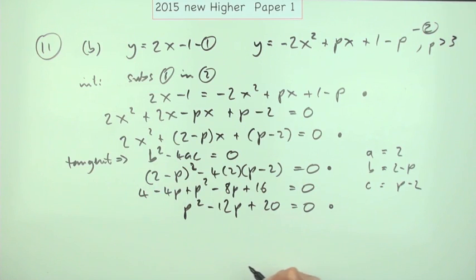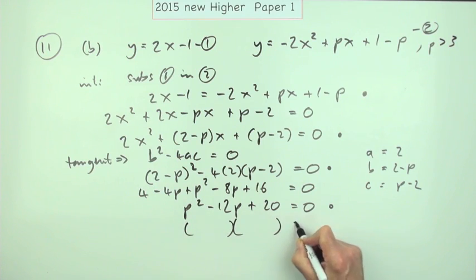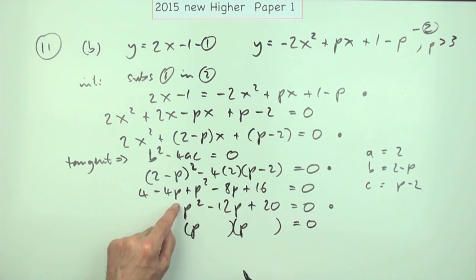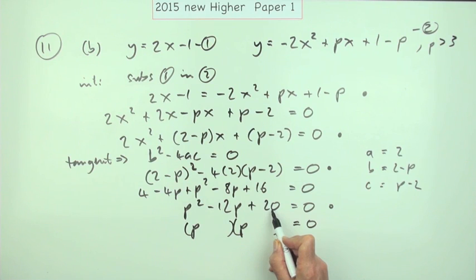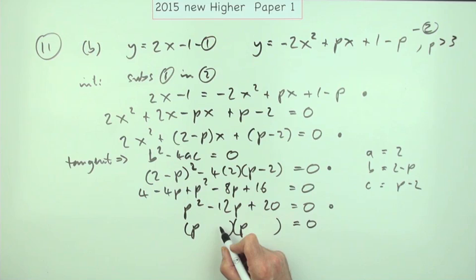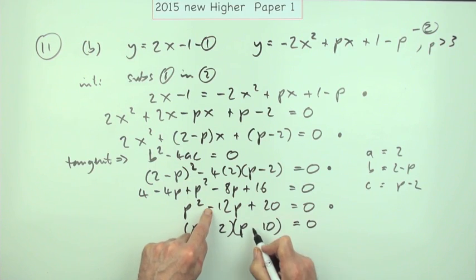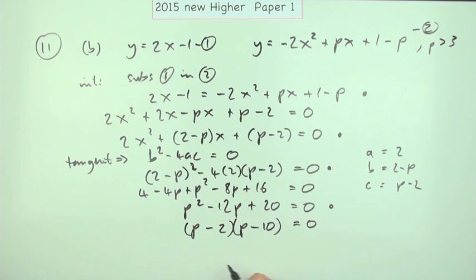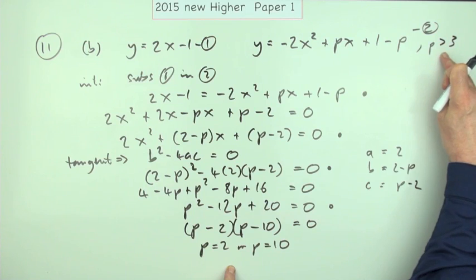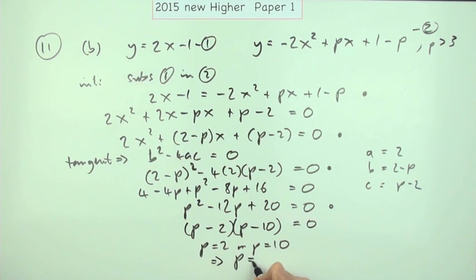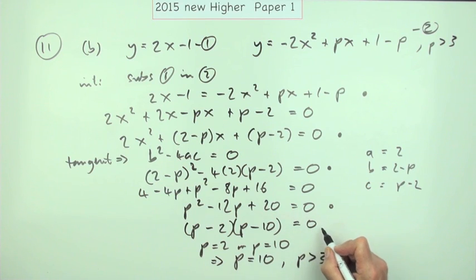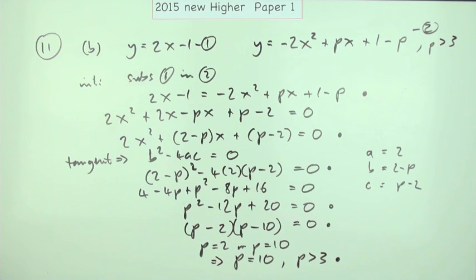There are two marks for solving this quadratic. It's monic — coefficient of one for the squared term. Numbers that multiply to give 20 and add to give 12: that's 2 and 10. The larger one should be negative, so p equals 2 or p equals 10. But the initial condition was p greater than 3. So the final answer is p equals 10. The factorisation was one mark, and the final answer p equals 10 is the sixth mark.